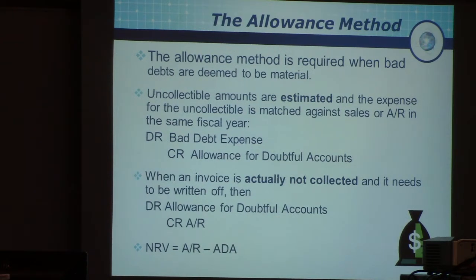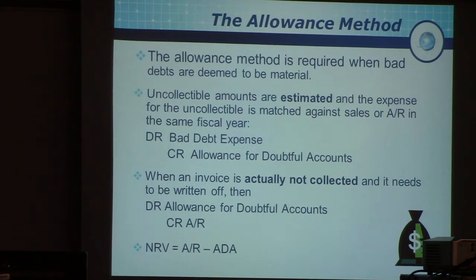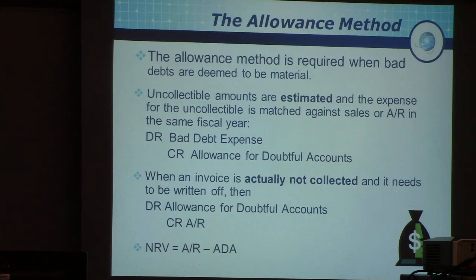For the allowance method, NRV is always calculated as AR minus ADA for net realizable value. Most companies use this method, and public companies are actually required to use it. You would debit bad debt expense and credit ADA — in this example, $24,000 — which is the amount determined by the company.